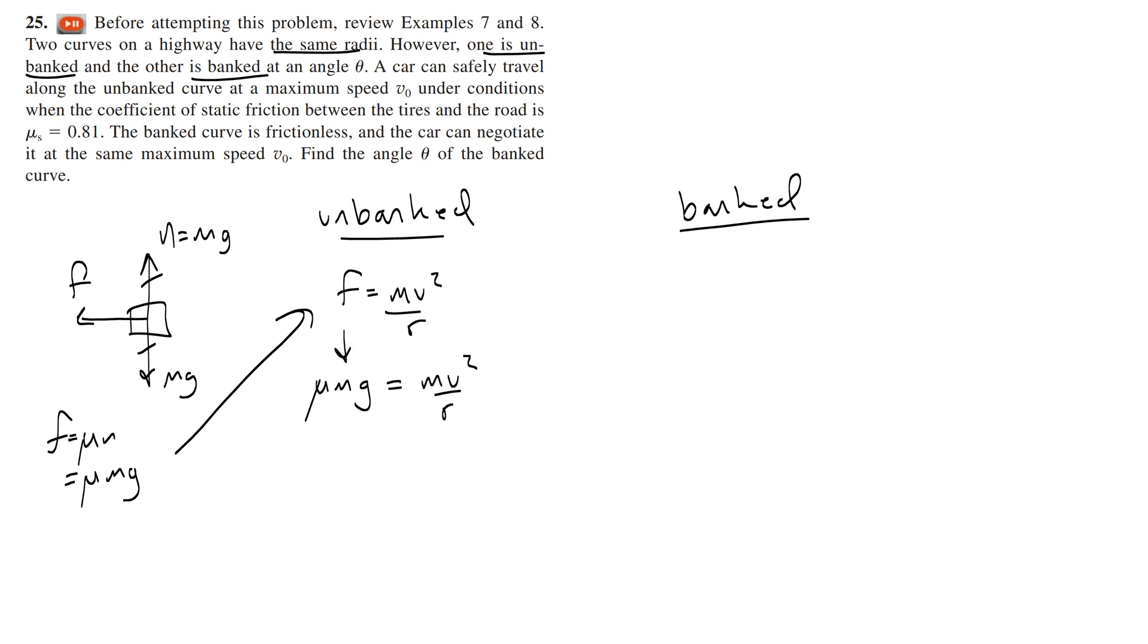So just like all of the unbanked problems where you have friction as your centripetal force, the mass goes away and you're left with mu G equals V squared over R. Now I should be careful to call this V naught because that's what they label their velocity and on the AP test things similar to that happen where you have to use what they give the velocity for.